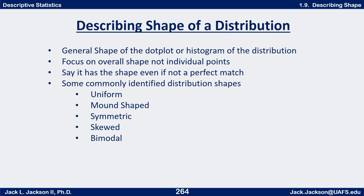We'll often say a distribution has a certain shape even though it may not be a perfect match. For example, uniform would require all the bars to be the same height. If they're just almost the same height we'd still call it uniform, or at least approximately uniform. Symmetric would require a perfect mirror image around a center line. If that's not exactly true but close, we'll still call it a symmetric distribution — technically approximately symmetric, but we usually won't bother using the word approximate.